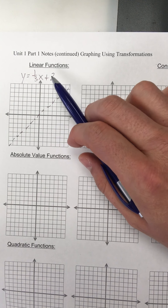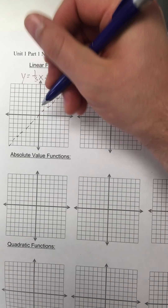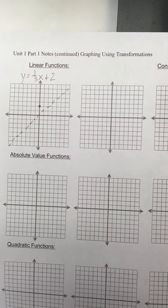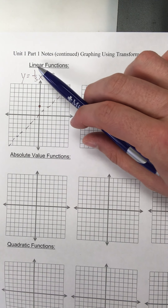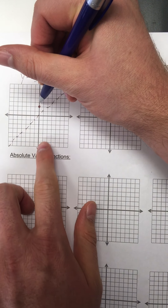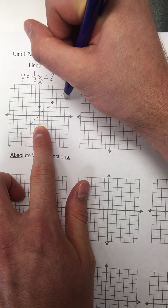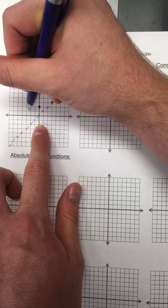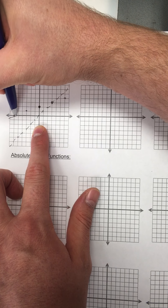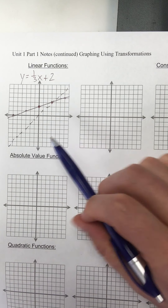Now, this plus two at the end — what does that do to the graph? Moves it up two. So instead of starting at (0,0), my final answer is going to move up two, starting at (0,2). And the slope is not one over one — that one-third fraction is a vertical shrink of one-third, meaning it's going to go up one over three. From that (0,2), up one over three, and down one to the left three. This darker line is the actual final answer.